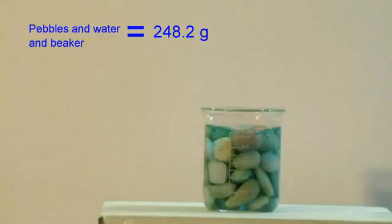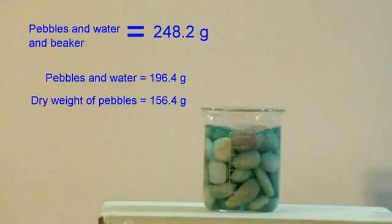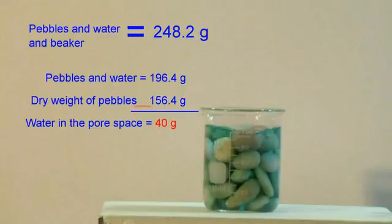The weight of the pebbles, the water, and the beaker is 248.2 grams. Once again, we will subtract the tare weight of the beaker and we find that the pebbles and the water weigh 196.4 grams. Compare that to our dry weight of the pebbles, which was 156.4 grams, and we see that the water that we poured into the beaker, simulating a rainfall, added 40 grams of weight to our sample.